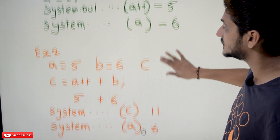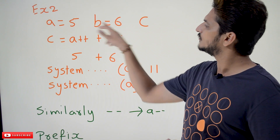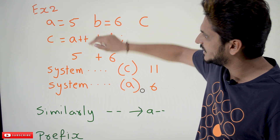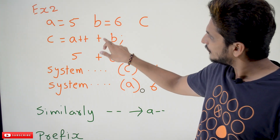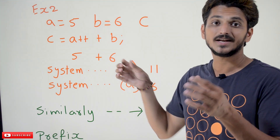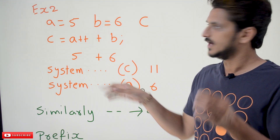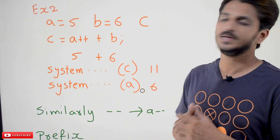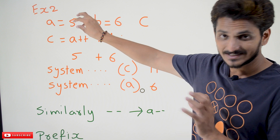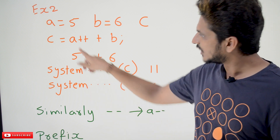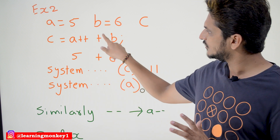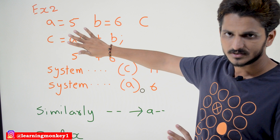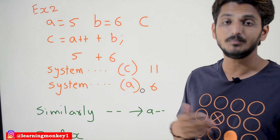One more example for better understanding of postfix: a = 5, b = 6, and c. We write the expression c = a++ + b. This binary + is applied between a and b, and ++ is the postfix operator applied to a. Initially the value of a is 5 — first assign this value to the statement, so here a is 5. 5 + 6 = 11, and 11 is assigned to c. After this, increment the value of a — that is the meaning of postfix.